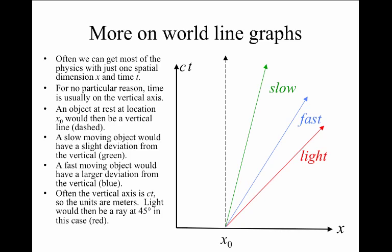Sometimes the vertical axis is recast not just to be time, but it's scaled into meters by multiplying by the speed of light c. So it's usually ct on the vertical axis and x on the horizontal. In this case, that helps us define what's the largest deviation from vertical that a world line can go.